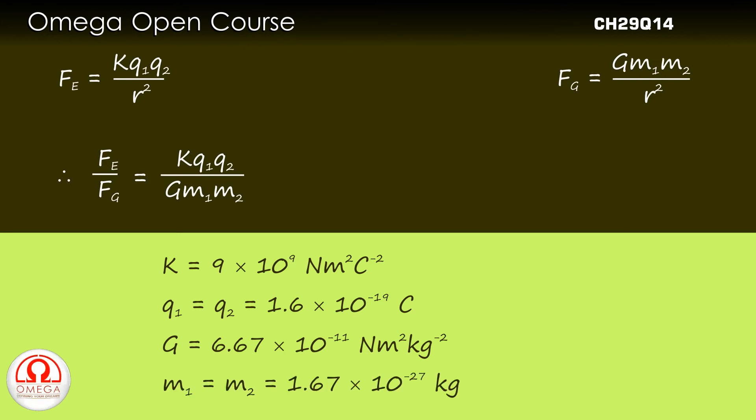Finally, the mass of a proton is 1.67 into 10 to the power minus 27 kg.